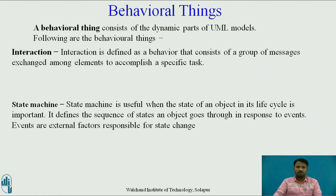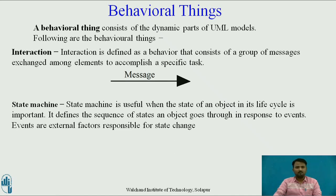A behavioral thing consists of the dynamic parts of the UML models. Interaction is defined as a behavior that consists of a group of messages exchanged among elements to accomplish a specific task. State machine is useful when the state of an object in its life cycle is important. It defines the sequence of states an object goes through in response to events. Events are external factors responsible for state change.